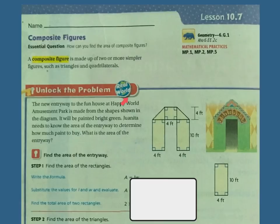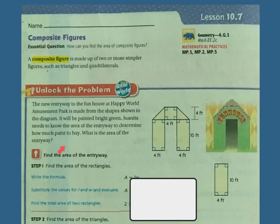Let's unlock the problem. The new entryway to a fun house at Happy World Amusement Park is made from the shapes shown in the diagram. It will be painted bright green. Juanita needs to know the area of the entryway to determine how much paint to buy. What is the area of the entryway?